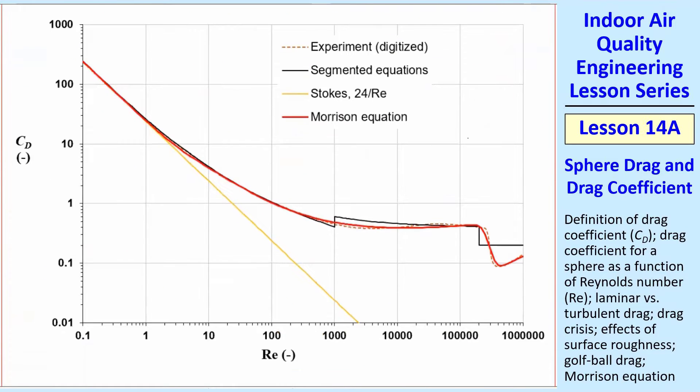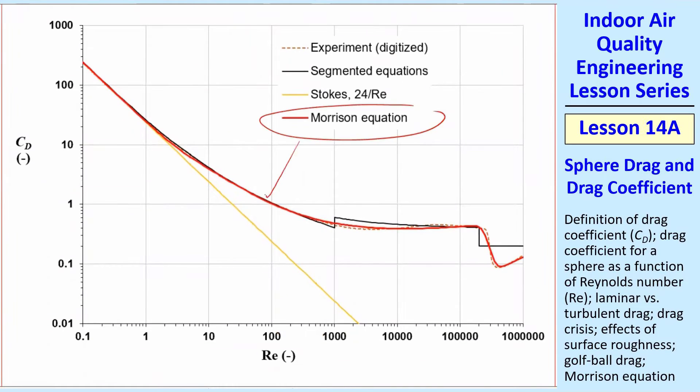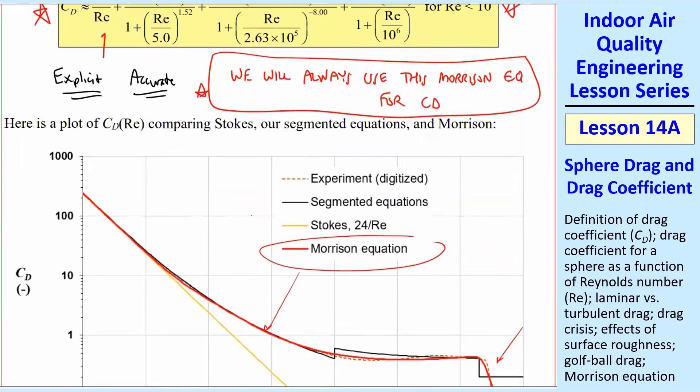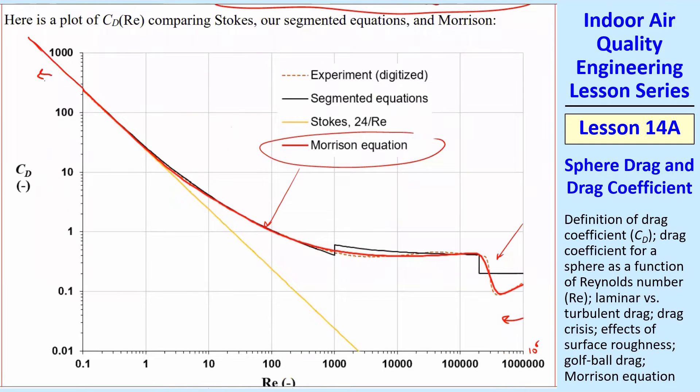And here's a plot, the same plot, but now I added Morrison's equation, which is this red line, and you can see that it follows the data. Even the drag crisis, it does almost perfectly, and it starts to recover to the 0.2. So this can be used for all Reynolds numbers below 10 to the 6th. This is a million or 10 to the 6th right there, all the way down to any low Reynolds number you want. This will just continue up like this straight line on the log-log plot, as far down in Reynolds numbers as you go.